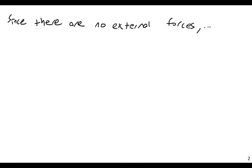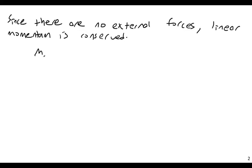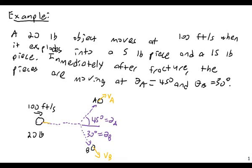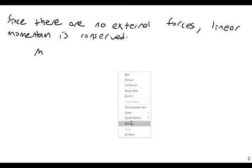So, the first thing to realize is that since there are no external forces, the linear momentum of the system will be conserved. Since there are no external forces, linear momentum is conserved. Thus, essentially like this. If I say, I could say MA, actually let me label this as perhaps V0 for the initial velocity. V0 being the initial velocity of the thing.